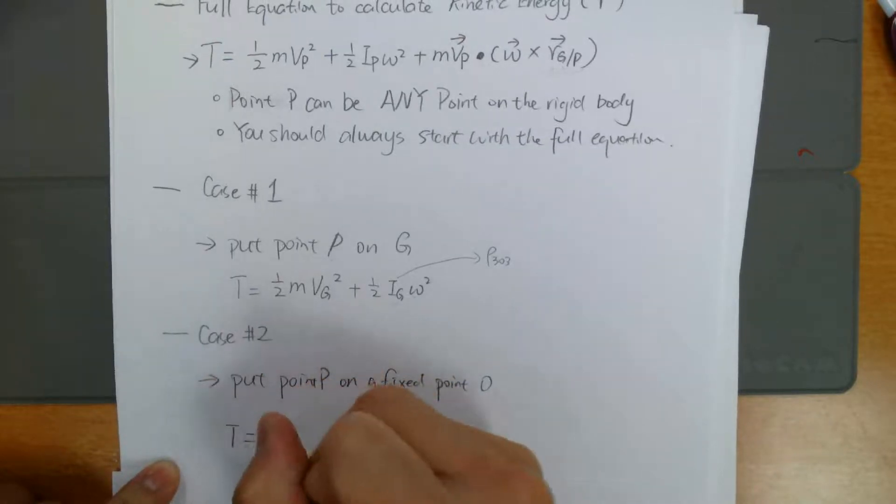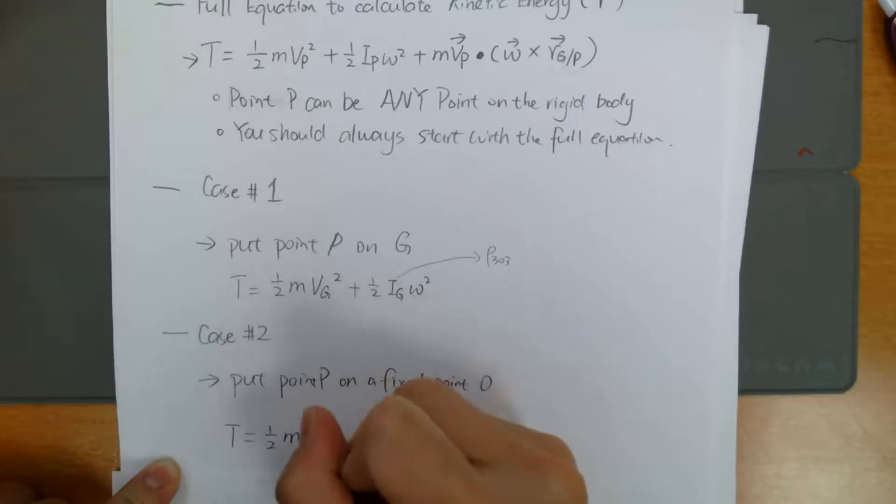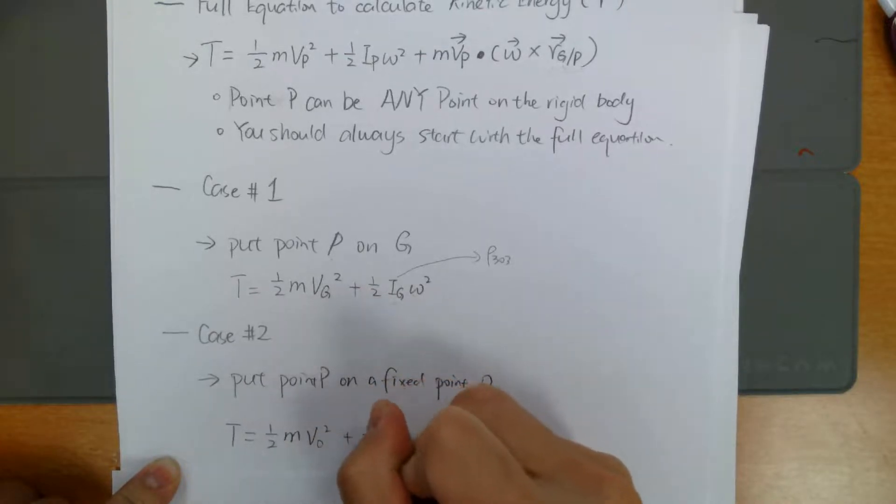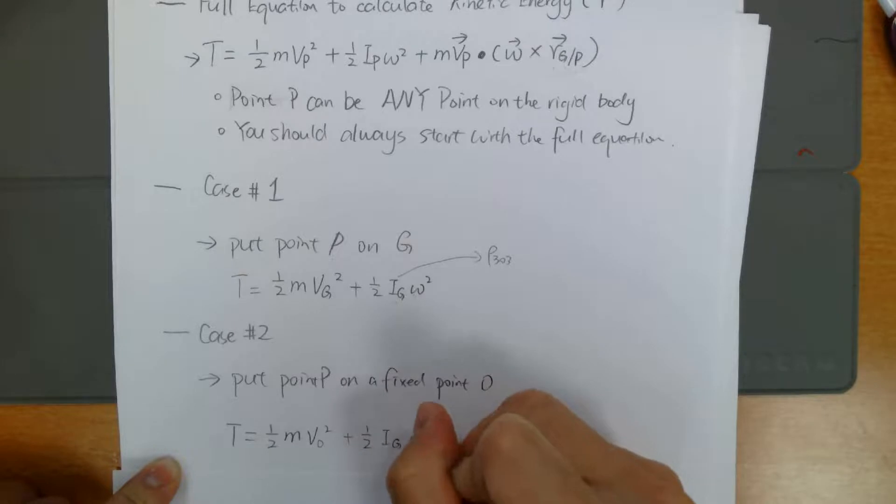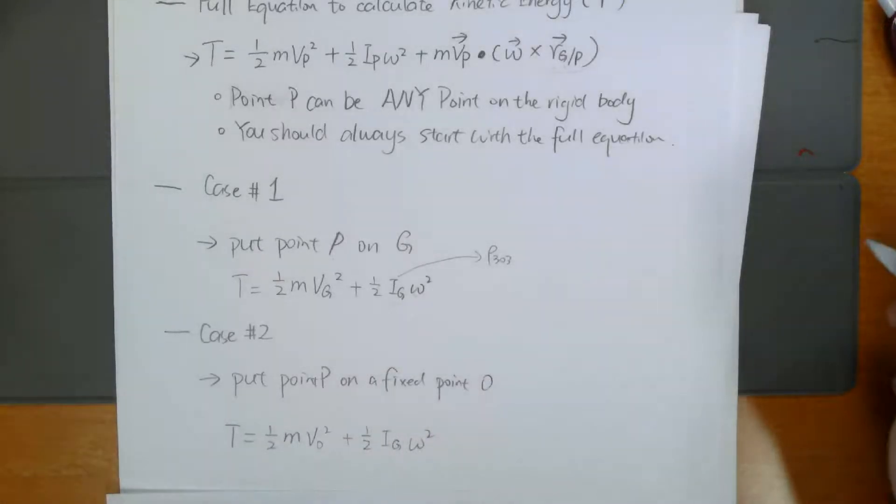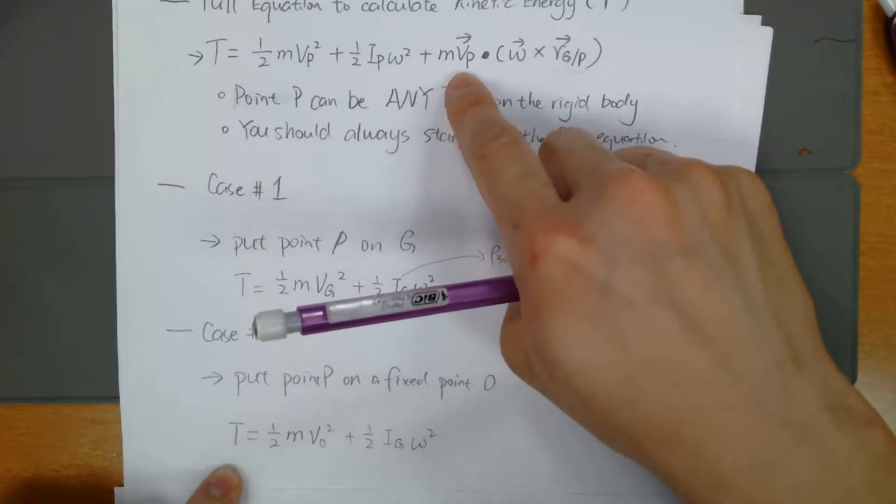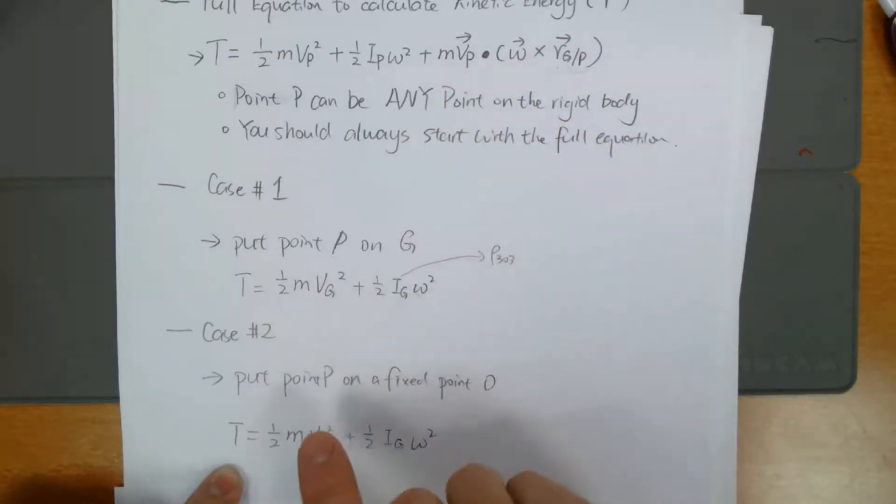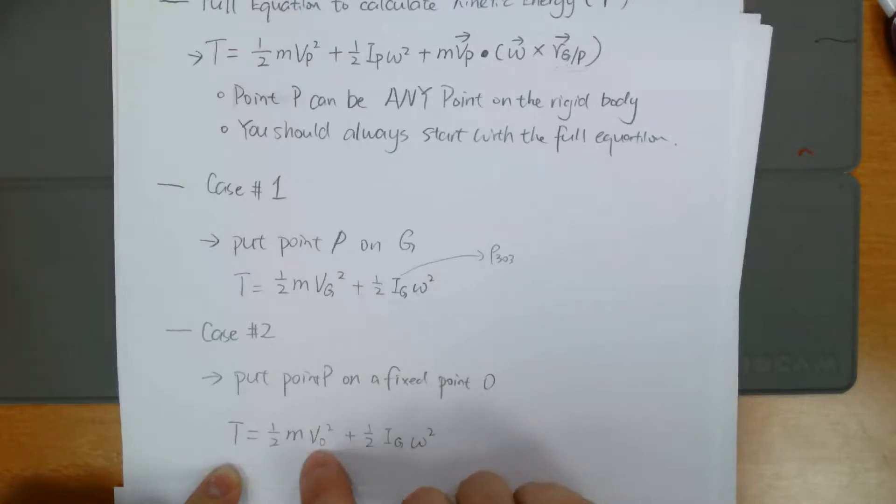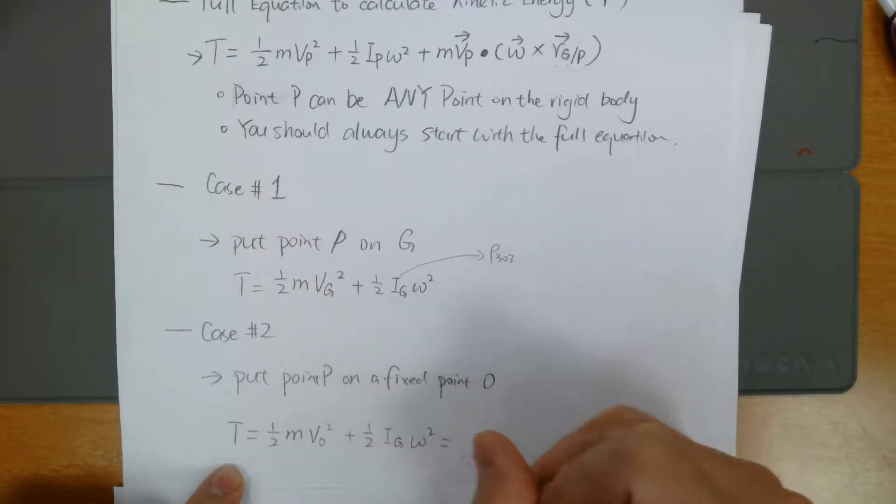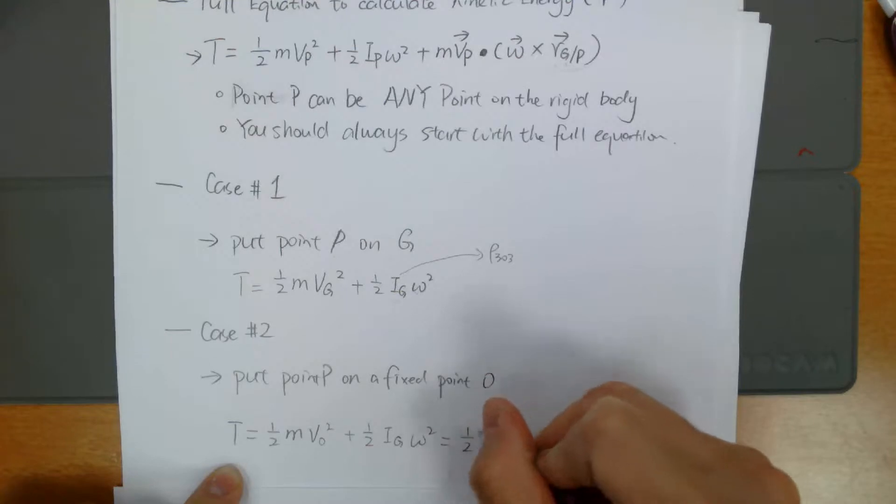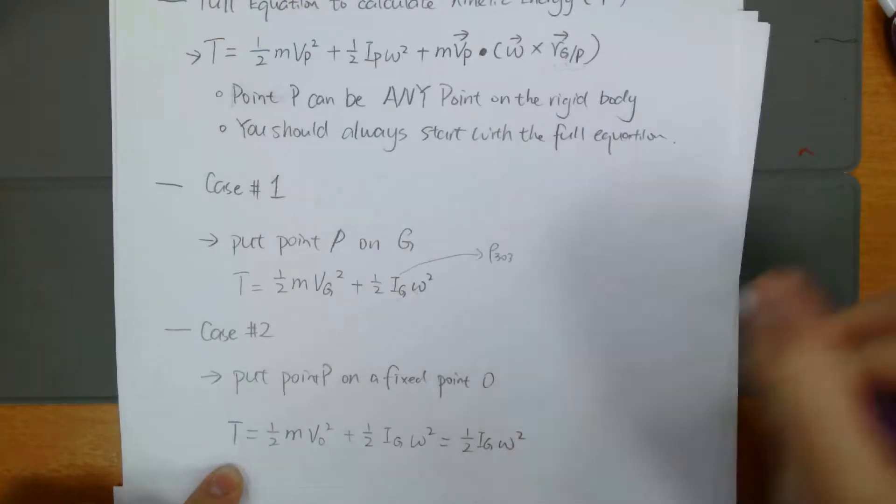If that's the case, for P on a fixed point O, our equation is going to be just one-half mvO squared plus one-half Ig omega squared. And since we pick a fixed point, so that vp vector goes to zero. If vp vector is zero, a fixed point should also have zero speed. So this can be further written down as one-half IO omega squared.